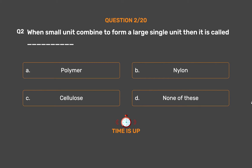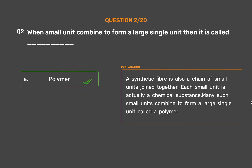The correct answer is Option A: Polymer. A synthetic fiber is also a chain of small units joined together. Each small unit is actually a chemical substance. Many such small units combine to form a large single unit called a polymer.